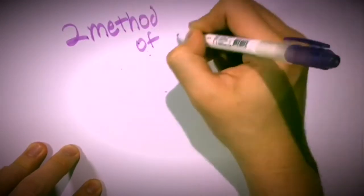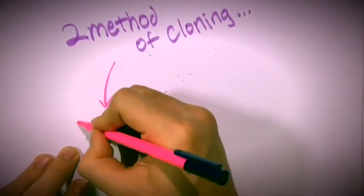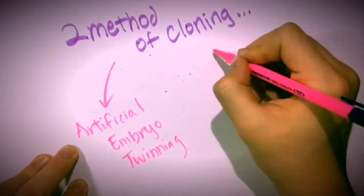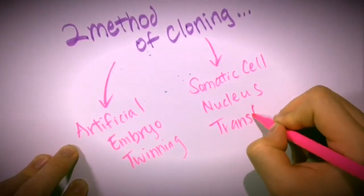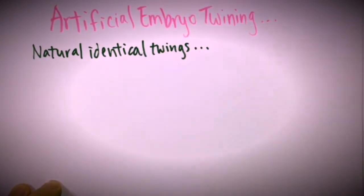The two methods of cloning are artificial embryo twinning and somatic cell nucleus transform. Artificial embryo twinning is basically mimicking the process of identical twins.